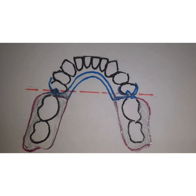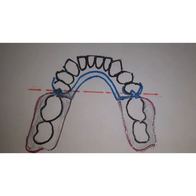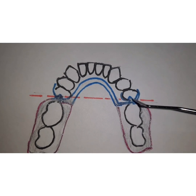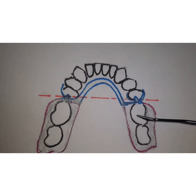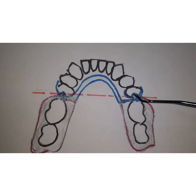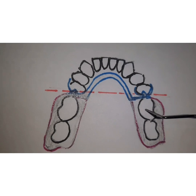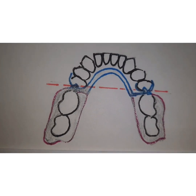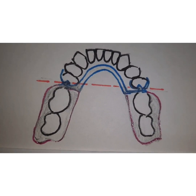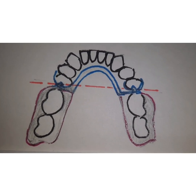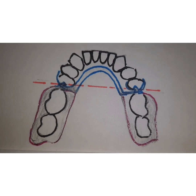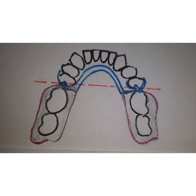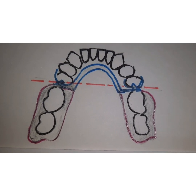In a Kennedy's Class 1 situation, maximum support is needed from both the edentulous region and the abutment teeth. The longer the edentulous span, the greater the stress on that tooth and the more support needed from the edentulous ridges. Researchers and clinicians have worked on concepts that minimize stress on abutment teeth, achieve even stress distribution, and lead to more successful partial denture designs.